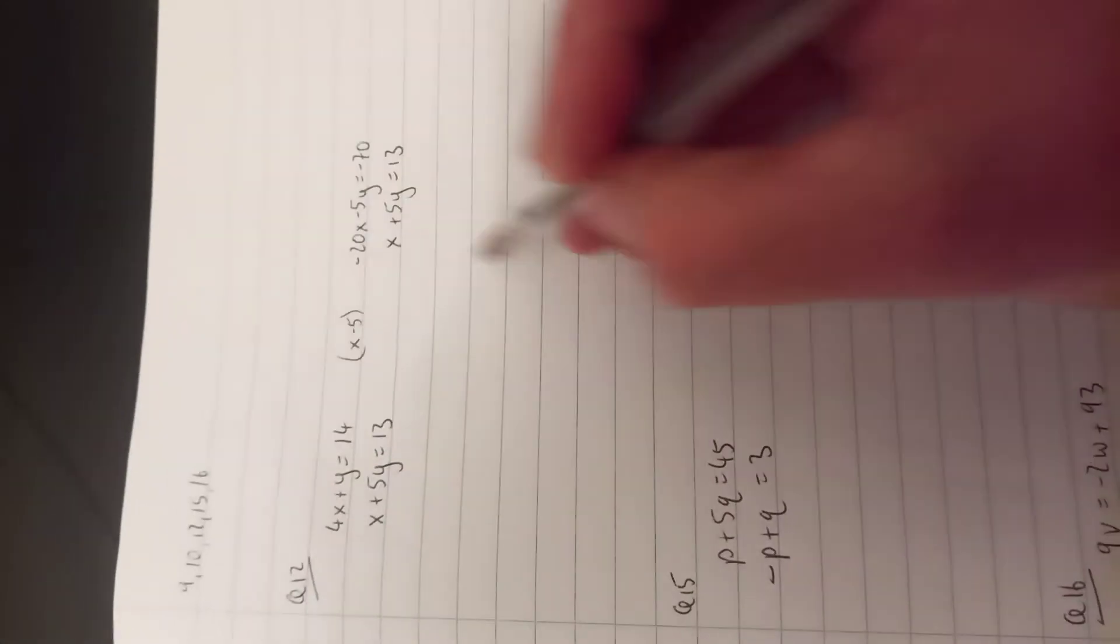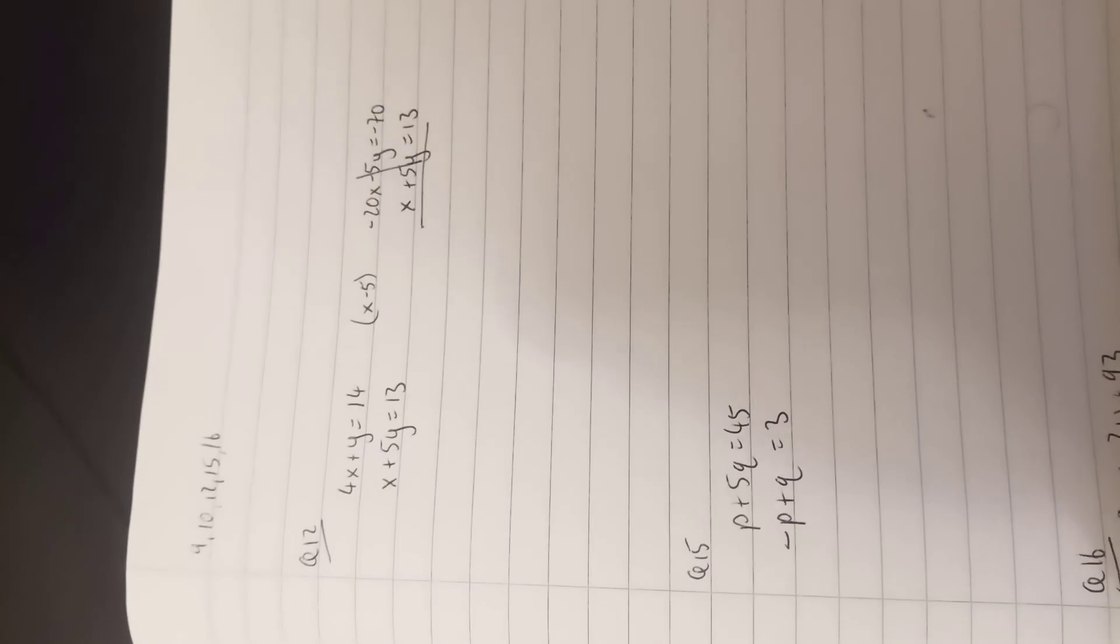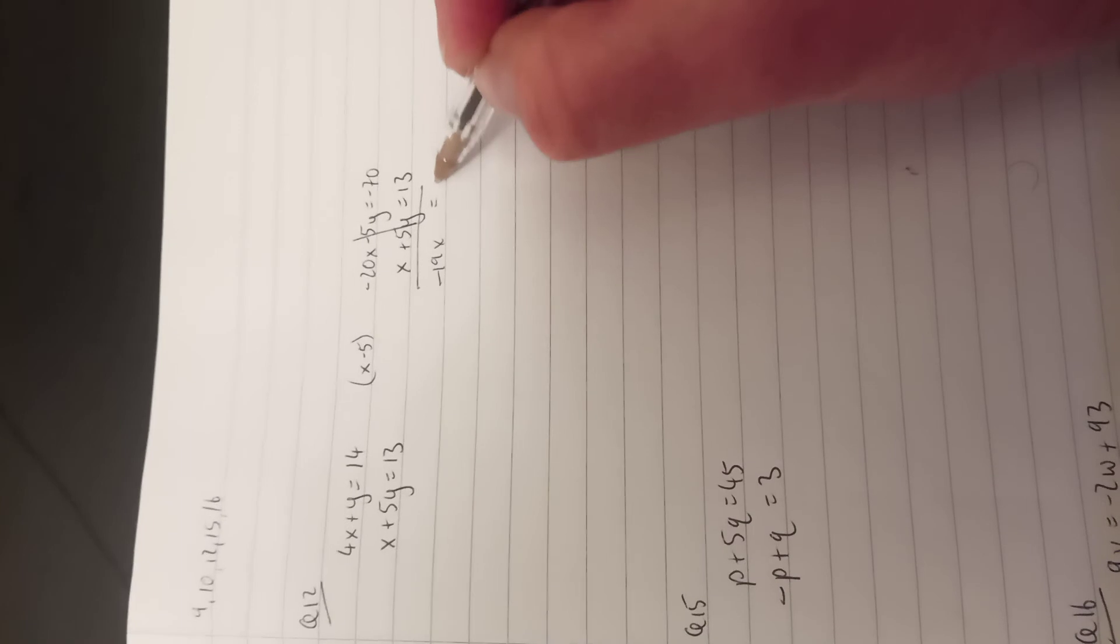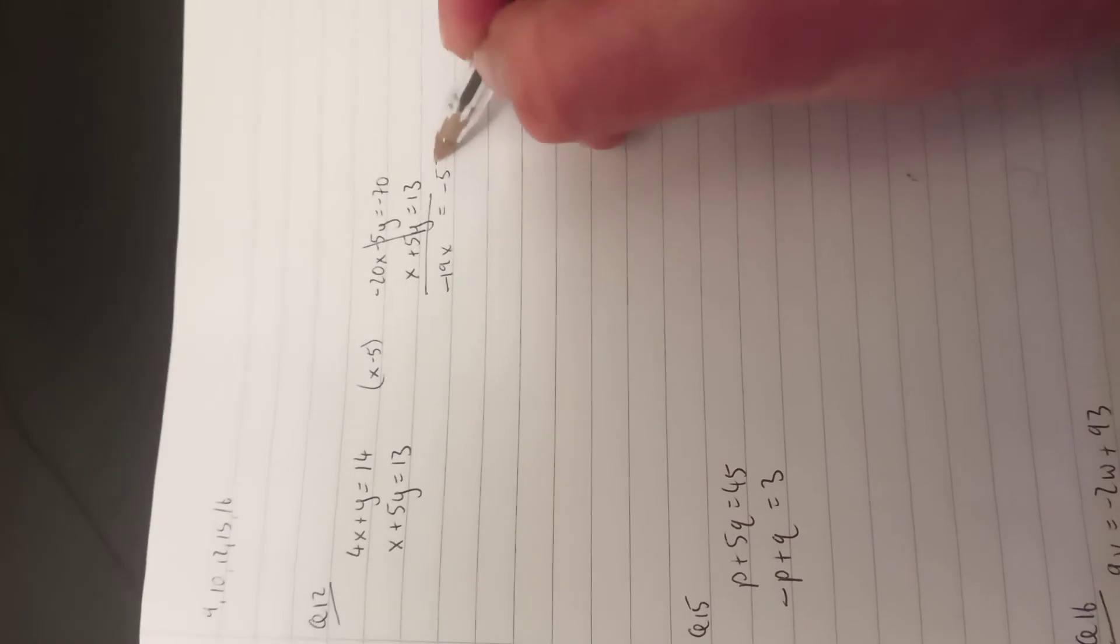Now that will allow me to add vertically, or subtract vertically. The y's are gone, and I'll be left with minus 19x equals minus 57.